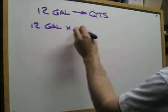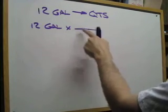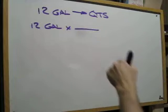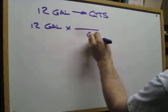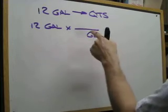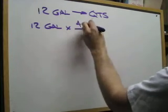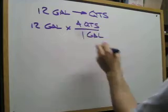And we do 12 gallons. Do we know anything about - so 1 times 1 line, because gallons has no exponent. Do we know anything about gallons and quarts? Yes. Oops, I forgot my gallons here.